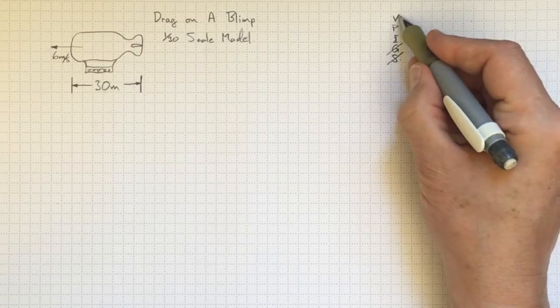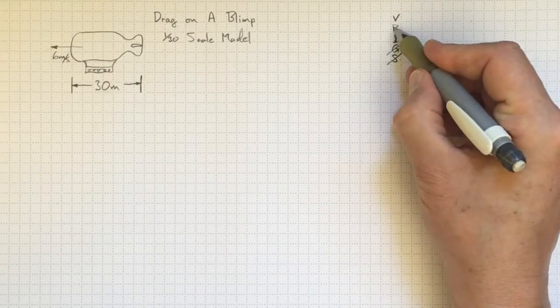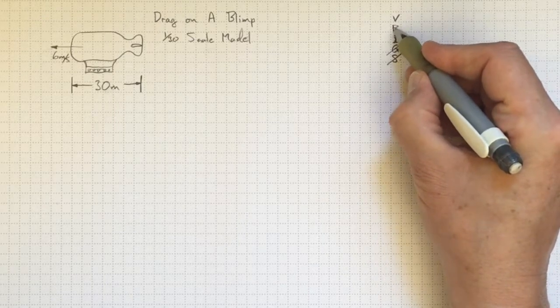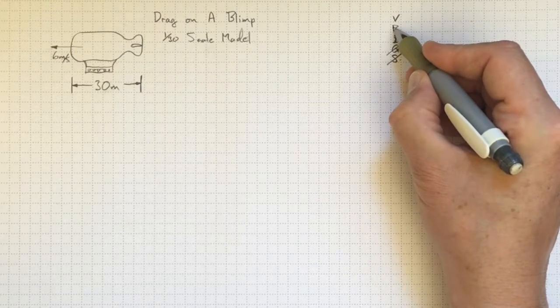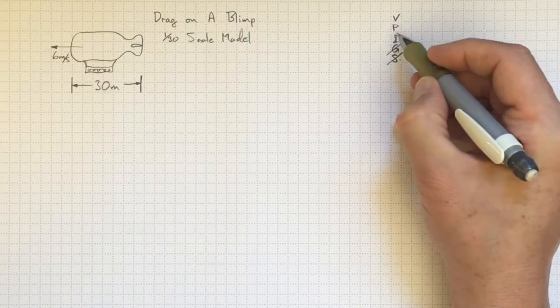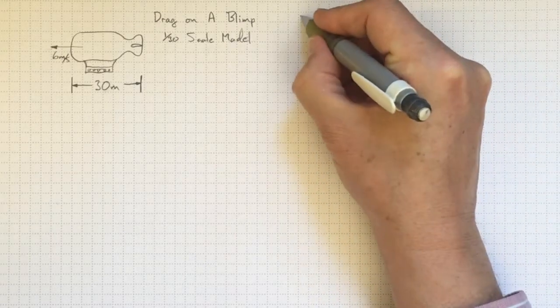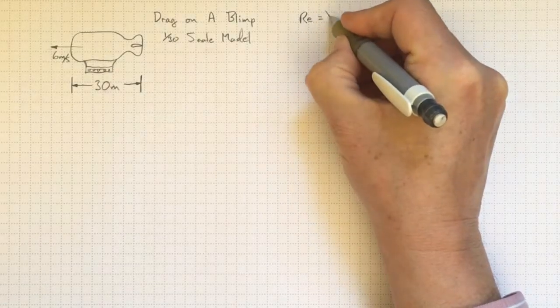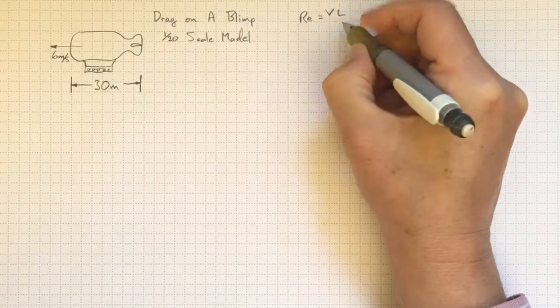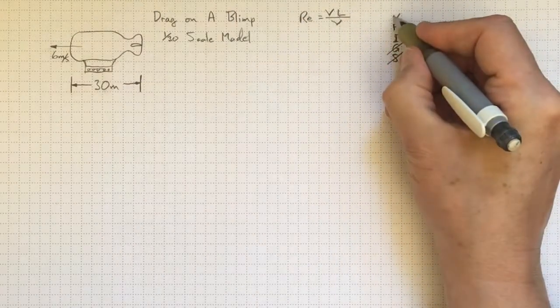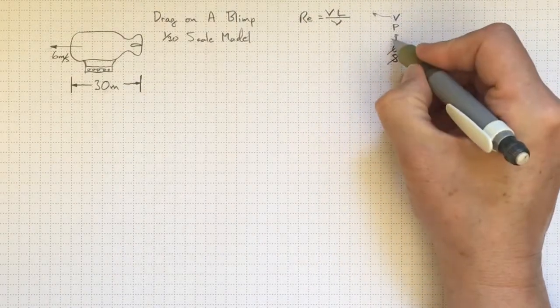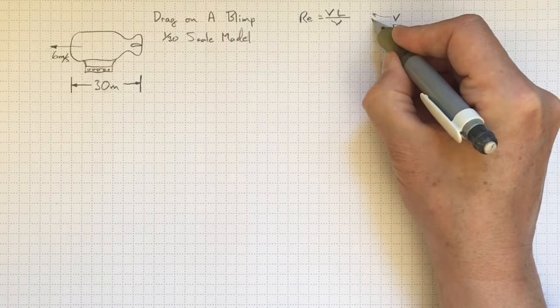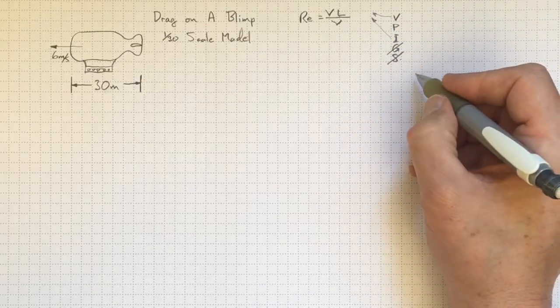So we're interested in the viscous forces, the inertial forces, and the pressure forces that lead to drag. Dimensionless groups that involve that? Well, we've got the Reynolds number. It's equal to the velocity times the length scale divided by the kinematic viscosity. And that's going to link the viscous forces to the inertial forces. Tell us about the relative importance of each one.